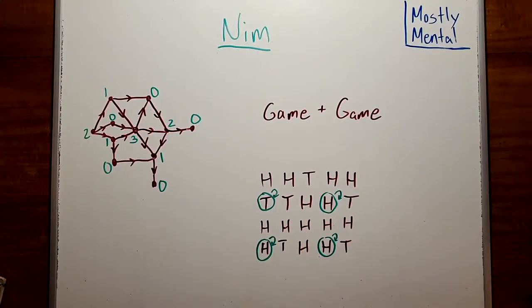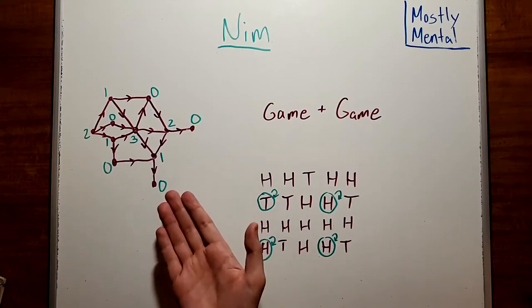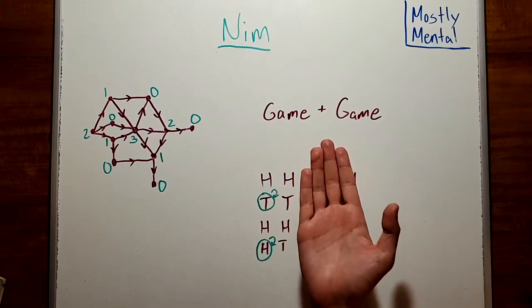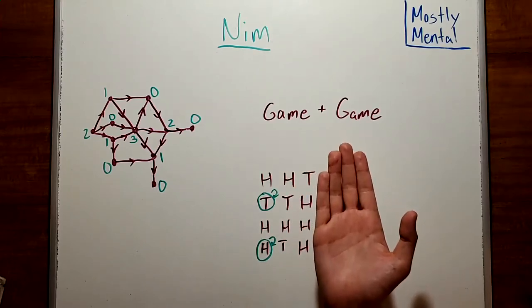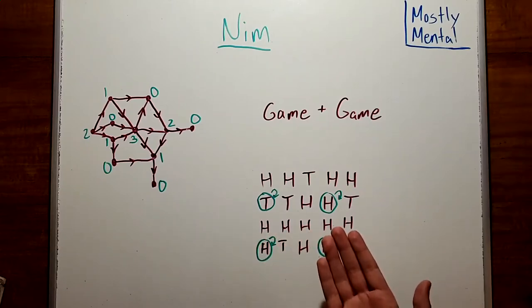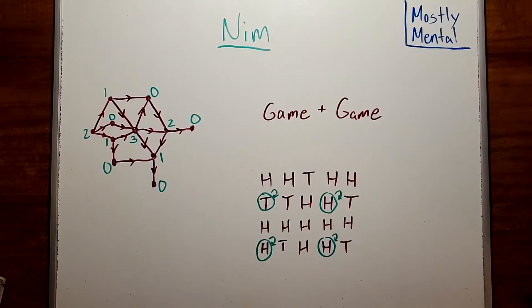Now, we have our winning strategy, and we could be happy with that. But there are always more questions to answer. For instance, does this help us find strategies for games that aren't NIM? What is this NIM sum really telling us, anyway? And if there's NIM addition, is there also, say, NIM multiplication? Join me next time as we answer these questions and explore the NIMbers.